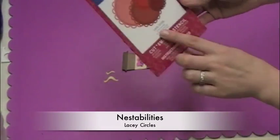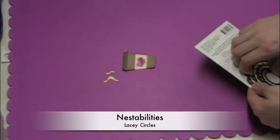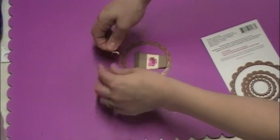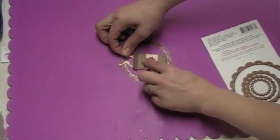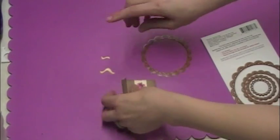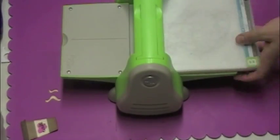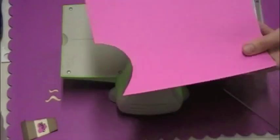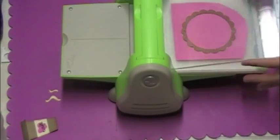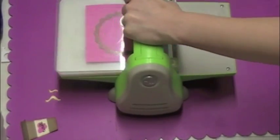Now I've got some nest abilities. This is the lazy circle set. I'm using not the largest but the one below it, second to largest. So I'm just laying it out to determine my size. I like that size. The wisps are gonna hang over the top a little bit and I'm cool with that.